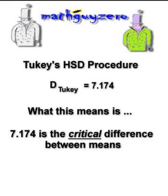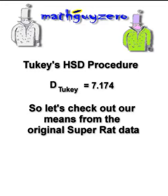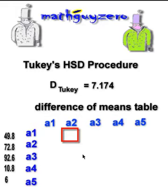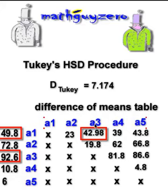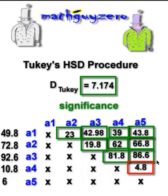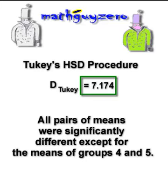We pull up the means from our original data and make a mean comparison table. For example, A2 compared to A1 — we subtract the differences and use the absolute value. We went ahead and did them all. Any mean difference greater than 7.174 is significant. So A3 minus A1, you subtract those two, and so on — the full table is completed. Practically every one of these is greater than 7.174 except for one. In conclusion, all pairs of means were significantly different except for the means of group 4 and group 5.